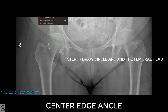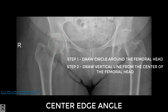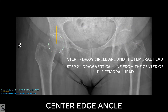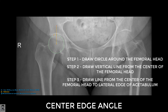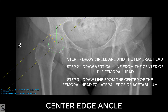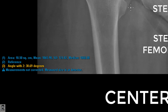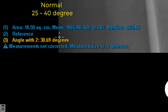We draw a circle around the femoral head so that the center point is basically the center of the femoral head. Next, we draw two lines. The first line goes straight up from the center of the femoral head. The second line goes from the lateral edge of the acetabulum down to join the center of the femoral head, giving you the angle between the vertical line and the acetabular edge.